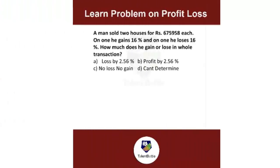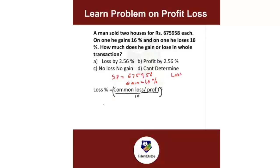A man sold 2 houses for ₹6,75,958 each — gaining 16% on one and losing 16% on the other. Many students think this is no loss, no gain, but whenever the selling price is the same and the gain and loss percentages are equal, the seller always has a loss. Shortcut formula: loss% = (common loss or profit / 10)². So (16/10)² = 256/100 = 2.56% loss.